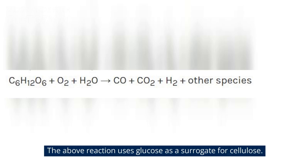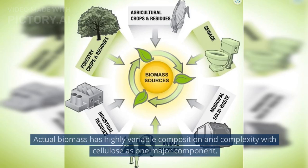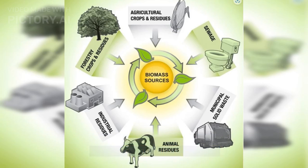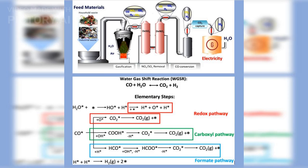The above reaction uses glucose as a surrogate for cellulose. Actual biomass has highly variable composition and complexity with cellulose as one major component. Pyrolysis is the gasification of biomass in the absence of oxygen. In general, biomass does not gasify as easily as coal, and it produces other hydrocarbon compounds in the gas mixture exiting the gasifier, especially when no oxygen is used.